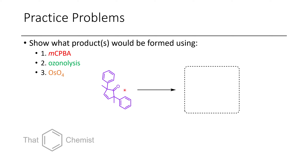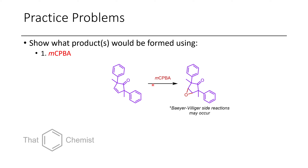In the first problem, I asked you to show what products would be obtained using the following three sets of conditions. If we treat an alkene with MCPBA, we will get an epoxide. Worth noting is that you could also potentially have a Baeyer-Villiger reaction, especially because these are tertiary and benzylic positions — this might be a faster Baeyer-Villiger than you'll typically see. We'll understand why that's the case later today.